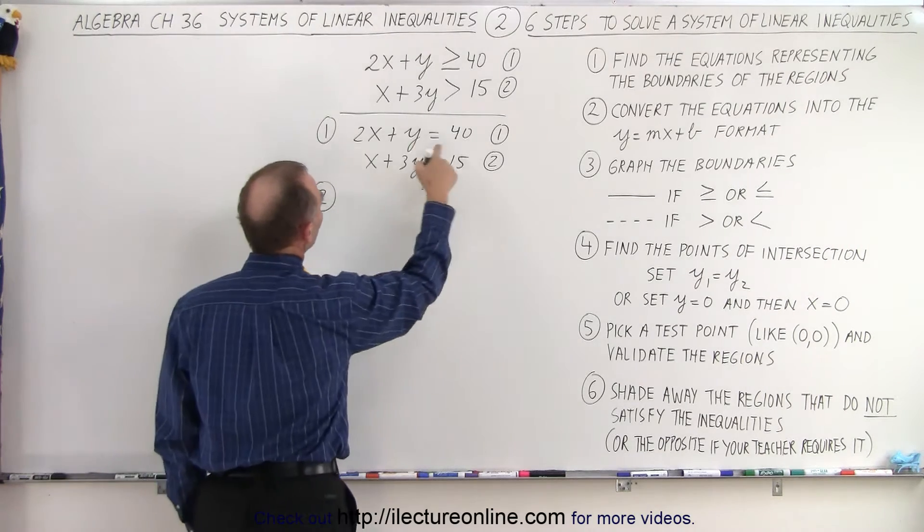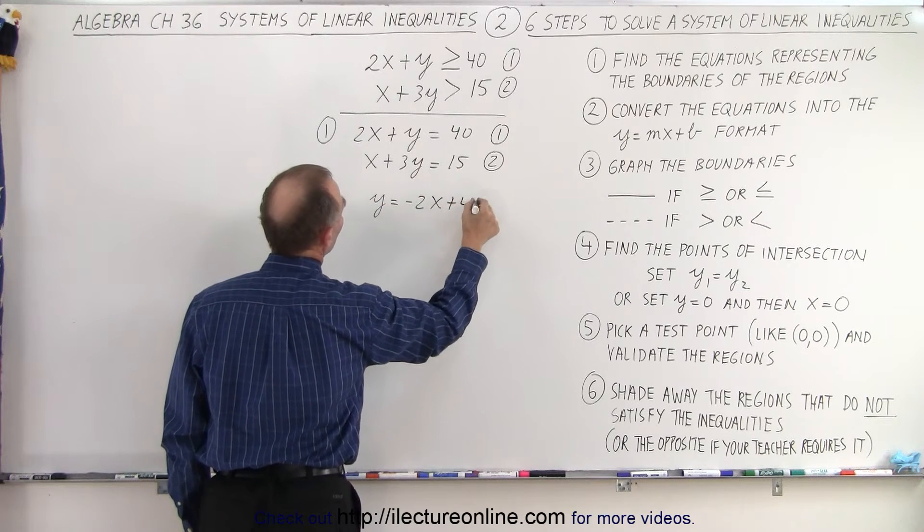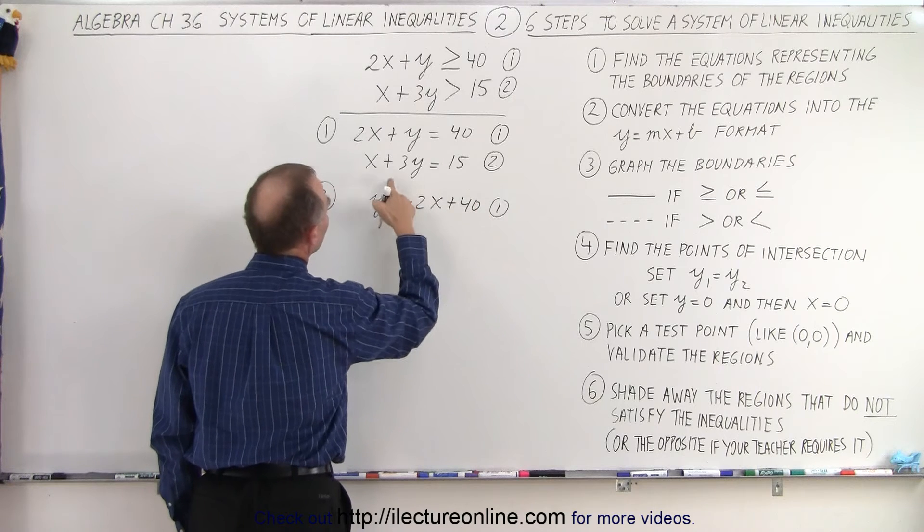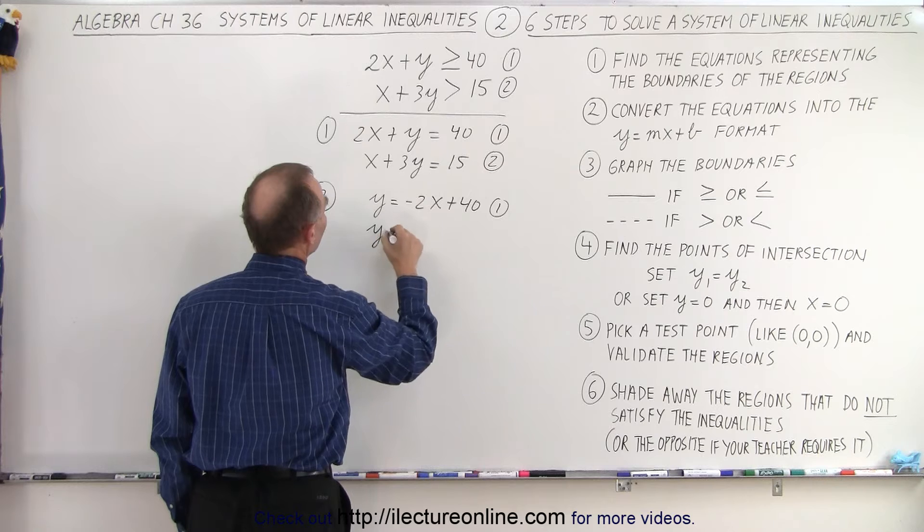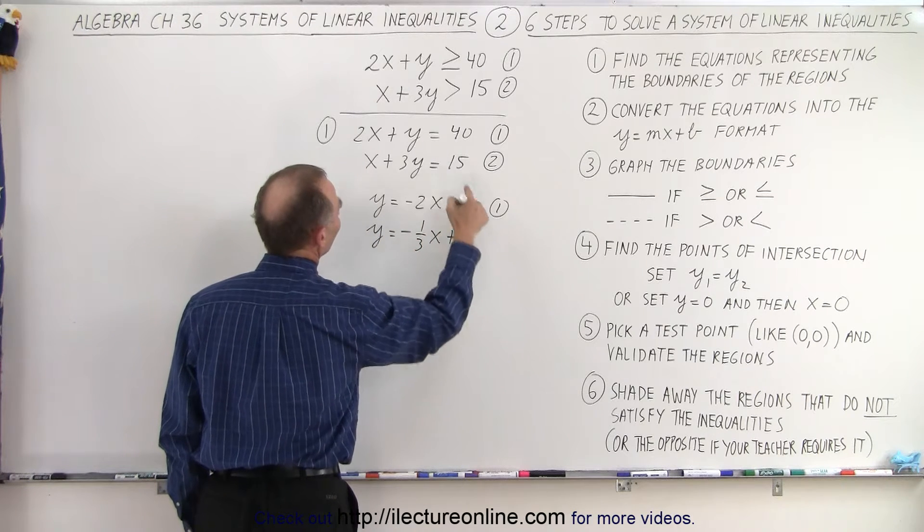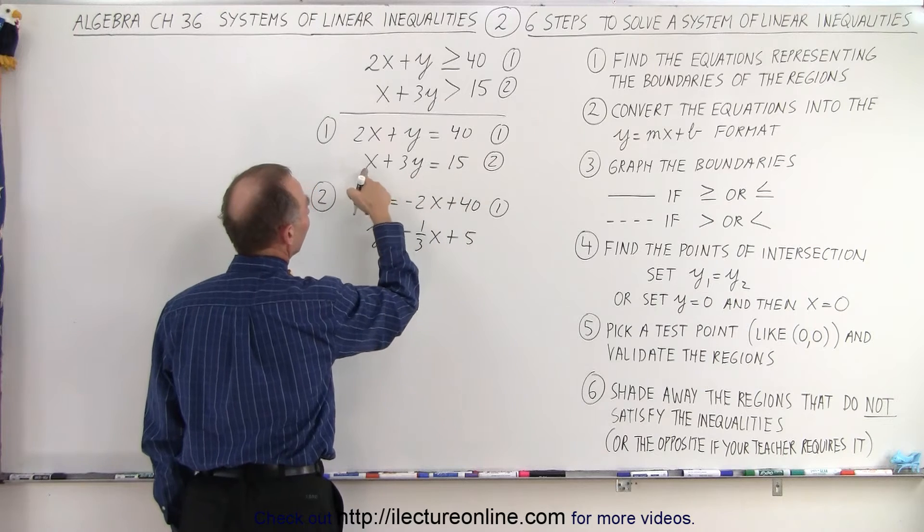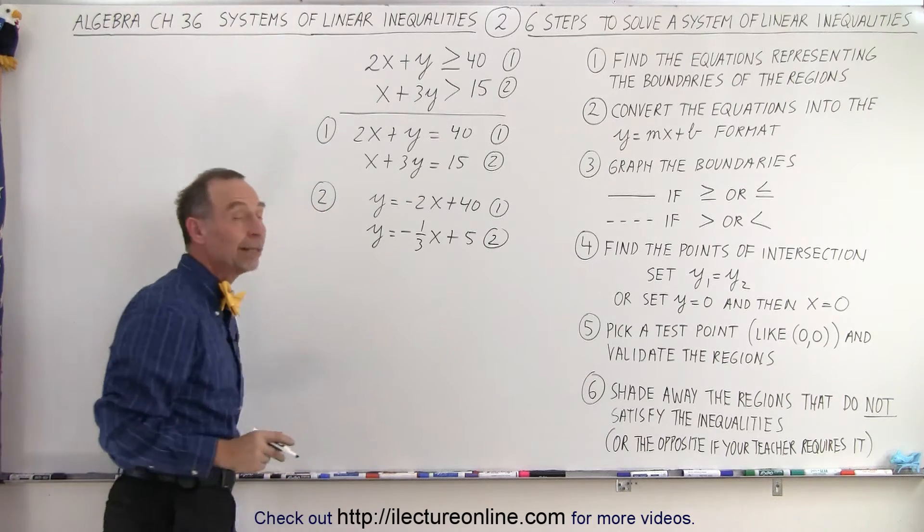So here we're going to move the 2x to the other side. So we have y equals minus 2x plus 40 which is equation number one and here we move the x to the other side, divide everything by three. We get y is equal to minus 1 third x plus 5. 15 divided by 3 is 5 and a negative 1 divided by 3 is a negative 1 third. So that's equation number two.